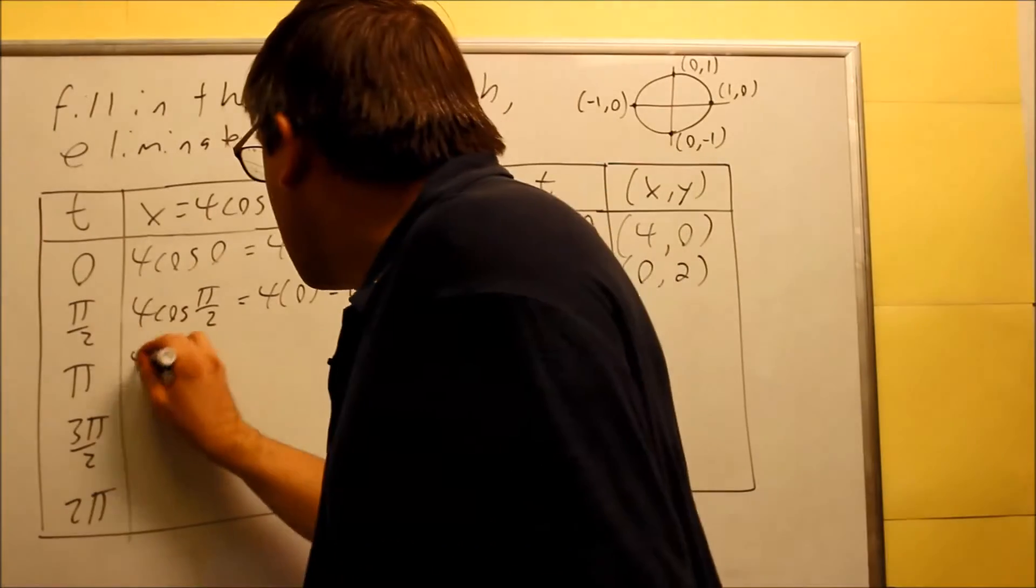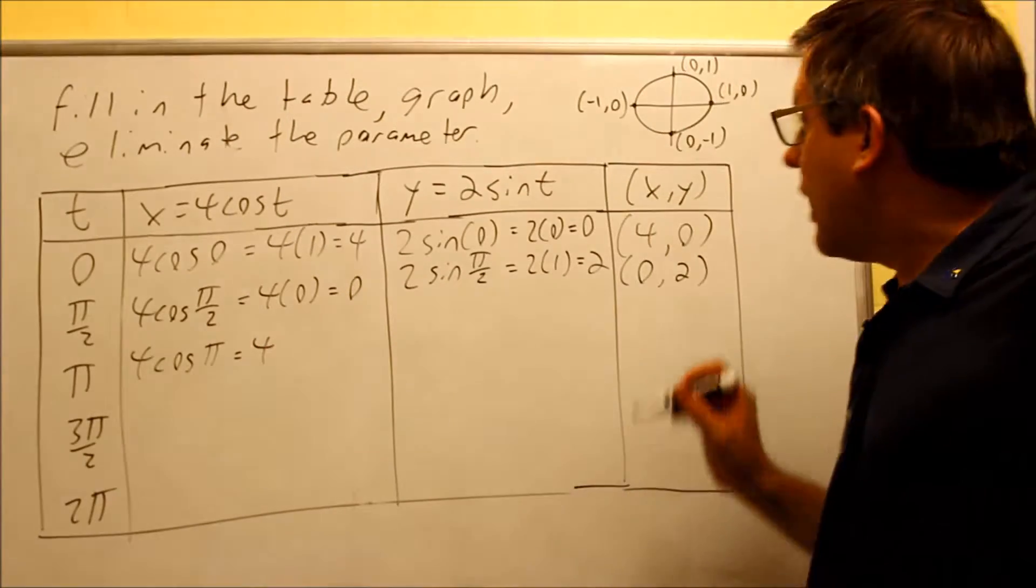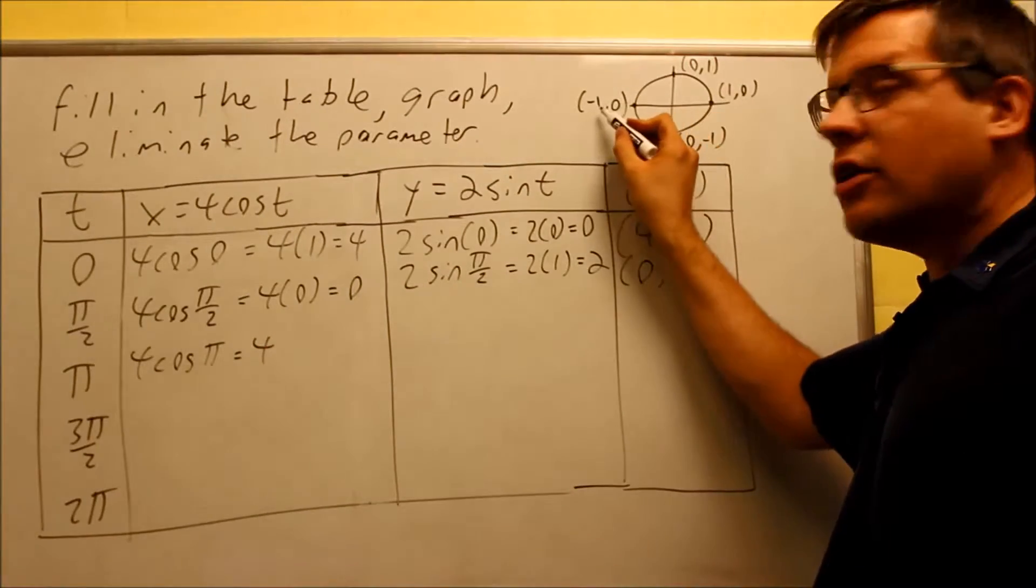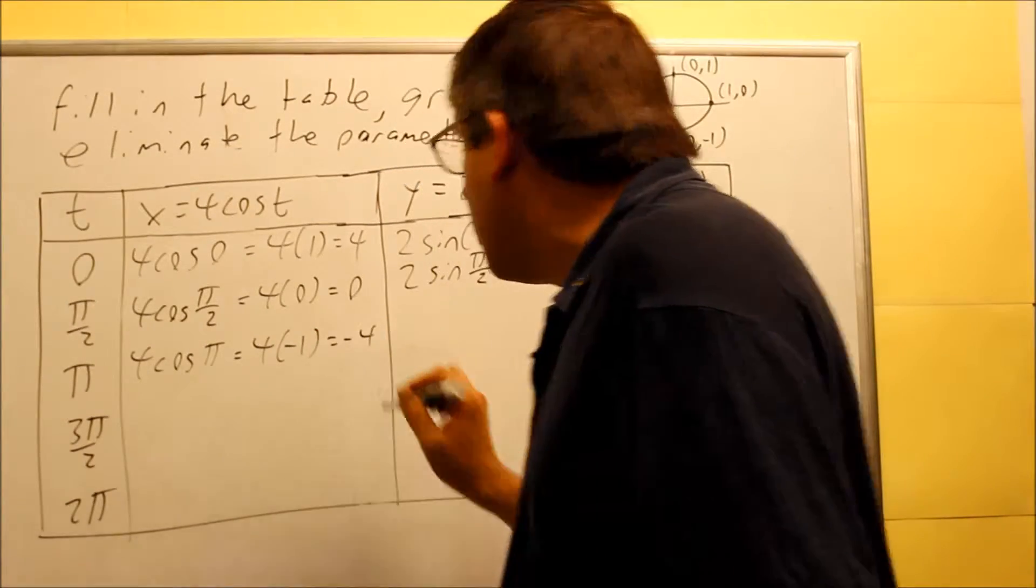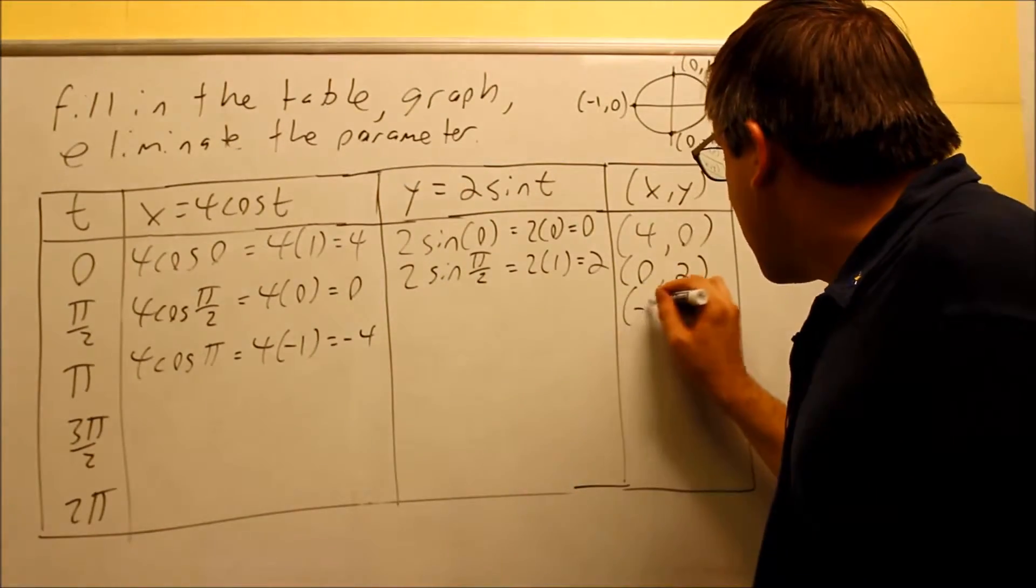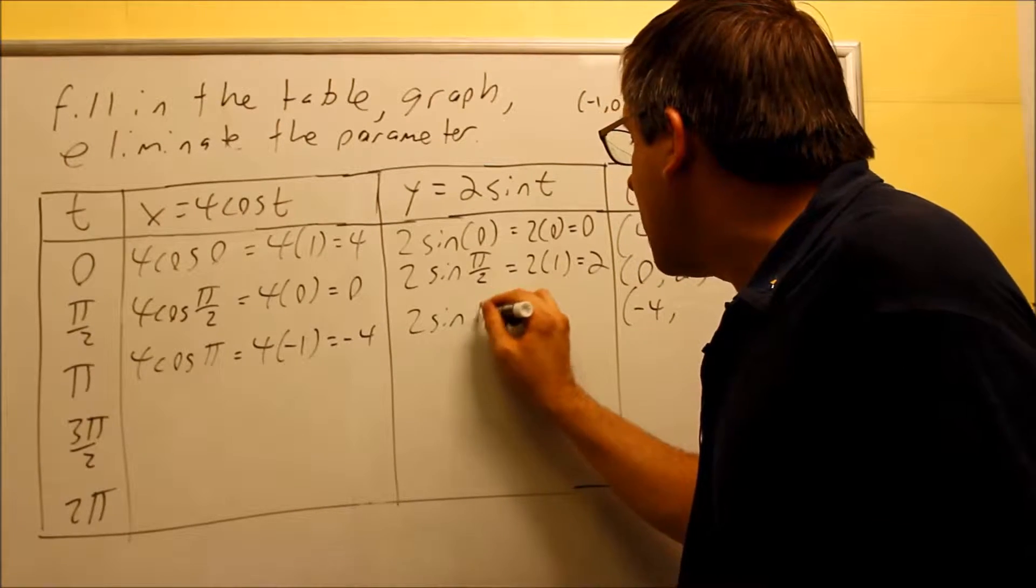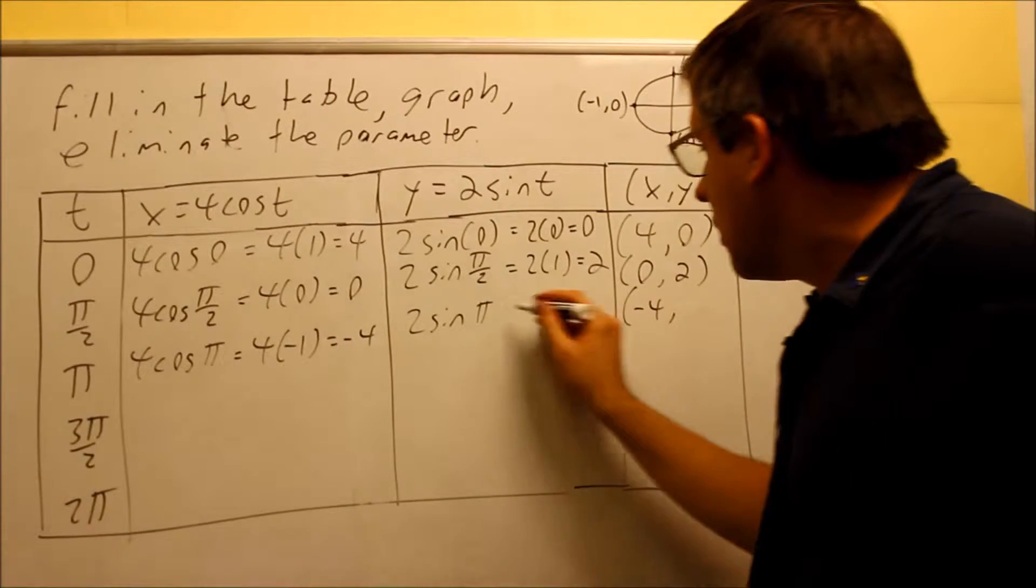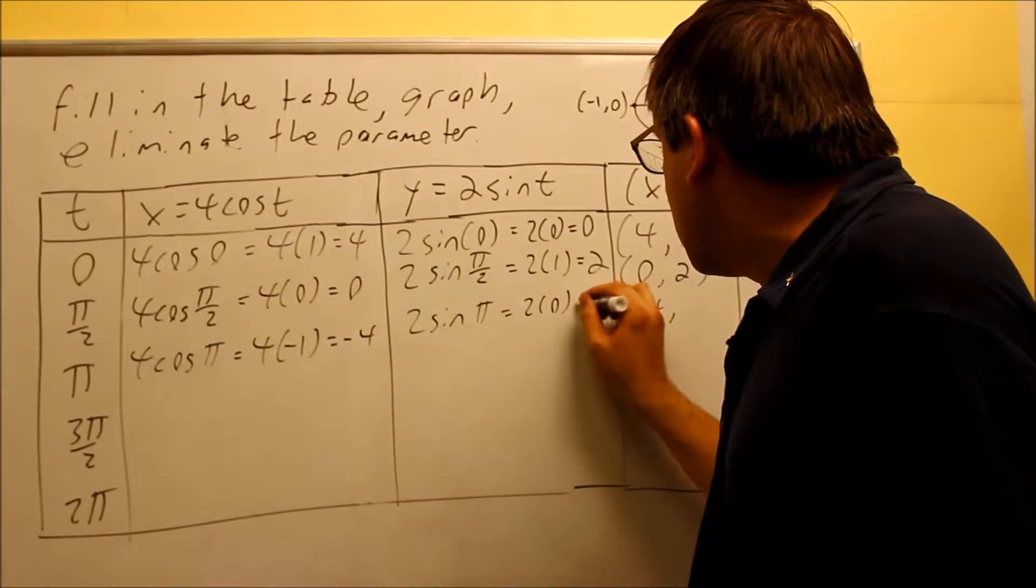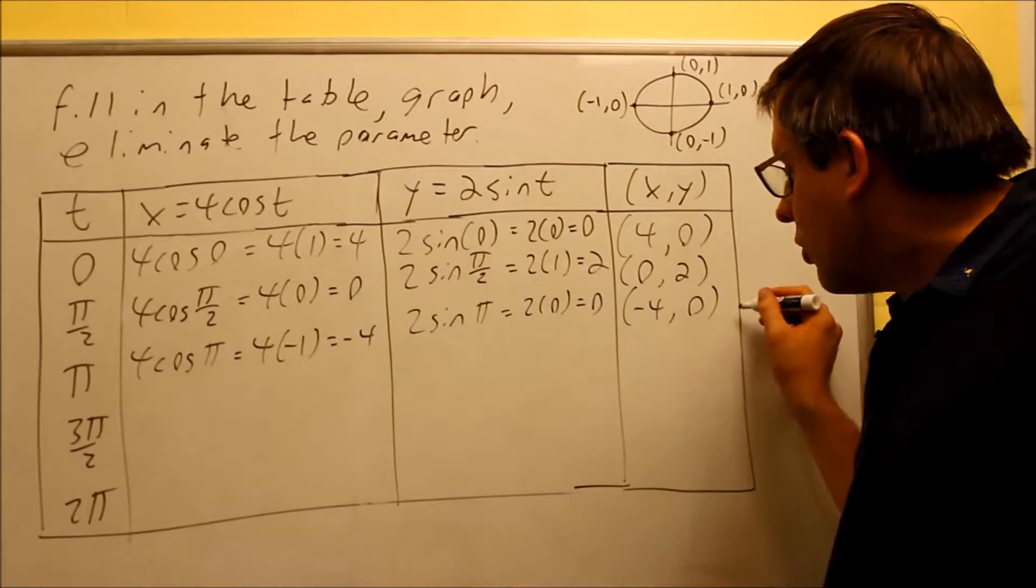Then we're going to put in π. 4 cosine π. All right, now cosine π, that's the x-coordinate at 180 degrees. That's negative 1. So 4 times negative 1 will give you negative 4. So now, that's going to be this one here. Then we have 2 sine of π. That's going to be the y-value at 180 degrees. That's 0. So that's going to be 2 times 0, and you get 0. So now I have (-4, 0) as the next coordinate.